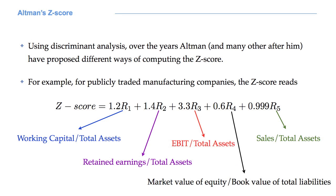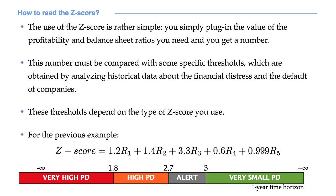Let's consider an example. For publicly traded manufacturing companies, the Z-score is obtained with the present equation. As you can see, this equation contains some numerical values, which are used to multiply some ratios, such as working capital to total assets and sales to total assets. By plugging in the values of the balance sheet ratios, we get a number — the Z-score. This number must be compared with some specific thresholds, which are obtained by analysing historical data about the financial distress and the default of companies.